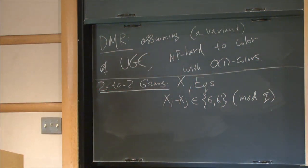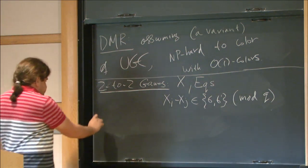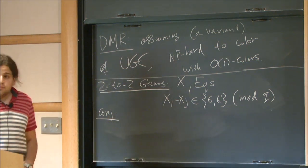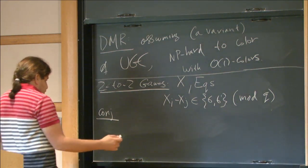And I ask you, how many of these equations can you satisfy? So the conjecture says, if I give you such system, it's NP-hard to tell me if it's fully satisfiable or at most 1% satisfiable.